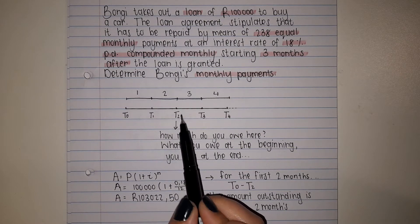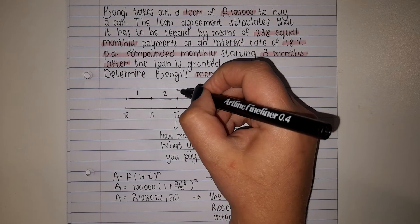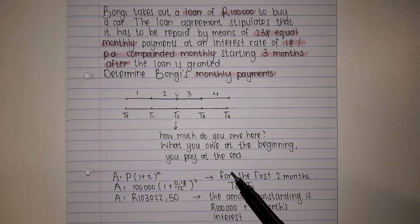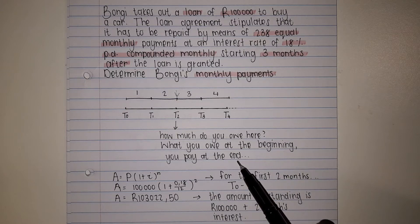We want to know what she needs to pay over here. The easy way to remember is what we owe at the beginning we pay at the end.